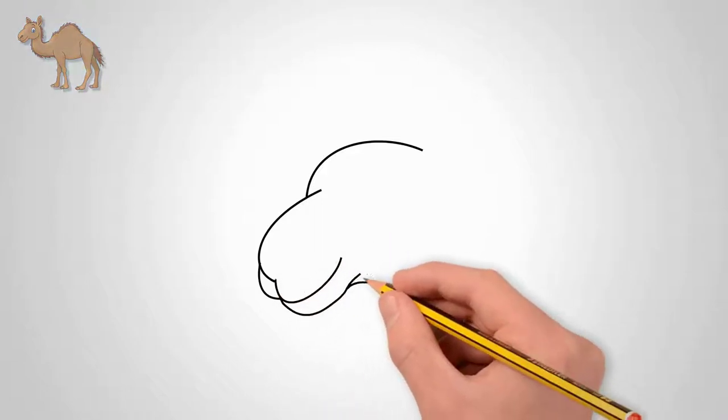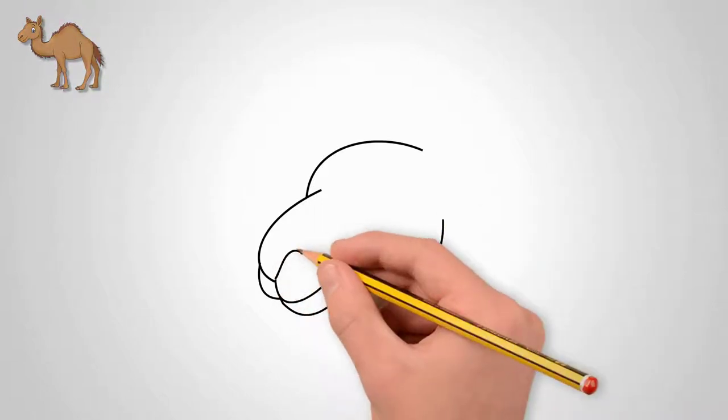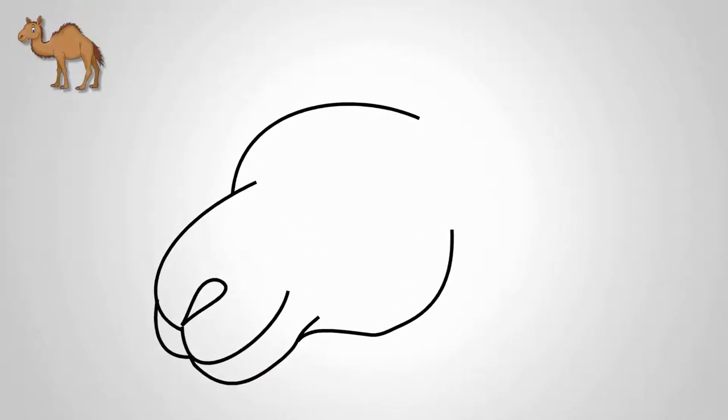First, draw the head of a camel. Draw a few lines. They are rounded, wavy, curved.